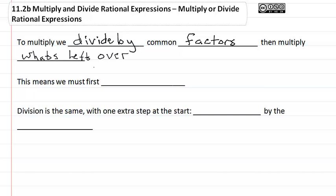This means we must first factor. Division is the same with one extra step at the start, and we're going to rewrite as a multiplication problem, so we're going to multiply by the reciprocal.